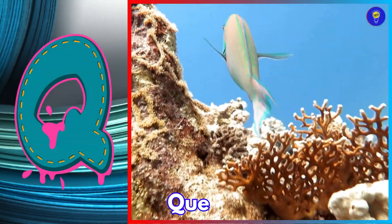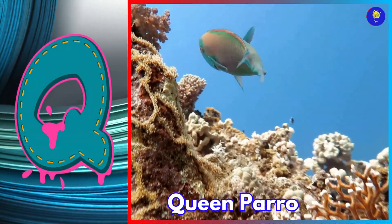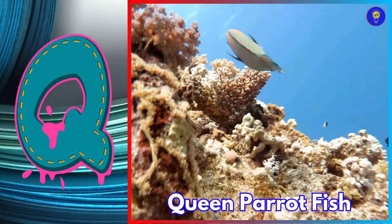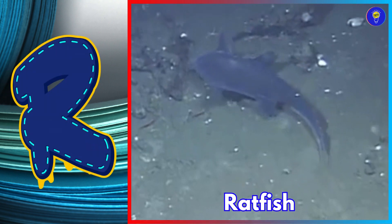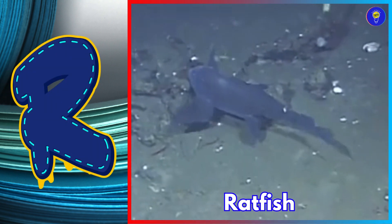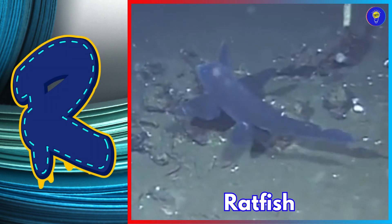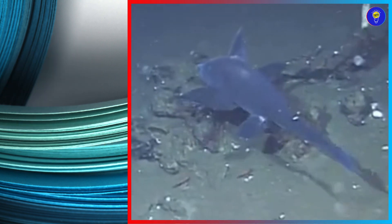Q is for queen parrotfish. Quh, queen parrotfish. R is for ratfish. Rr, ratfish.